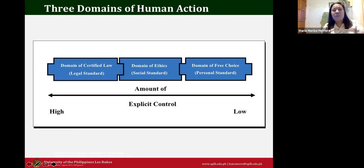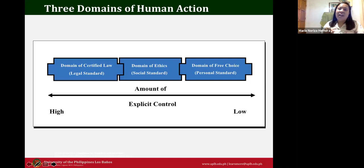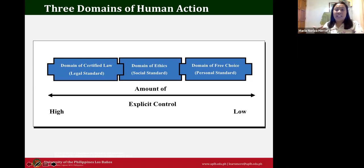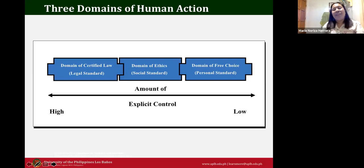There is a moderate degree of control for an organization operating at the domain of ethics, meaning social standard. Not all laws or social standards are right, but we try to make them right, especially if they conflict with the moral law. We can choose to agree to disagree, because we are all formed by our environment and our beliefs.